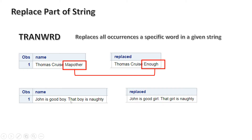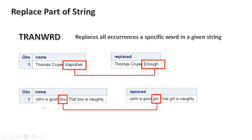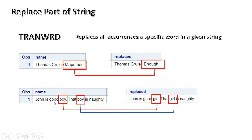Let's look at another example where the word 'boy' is written twice. If you use TRANWRD, you can change 'boy' to 'girl'. Previously it was written as 'John is a good boy' — now it shows 'John is a good girl'. Again, 'that boy is naughty' becomes 'that girl is naughty'. So whatever word you specify, if it occurs more than once in a string, all occurrences will be replaced.